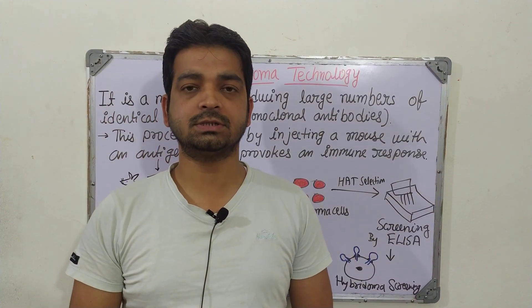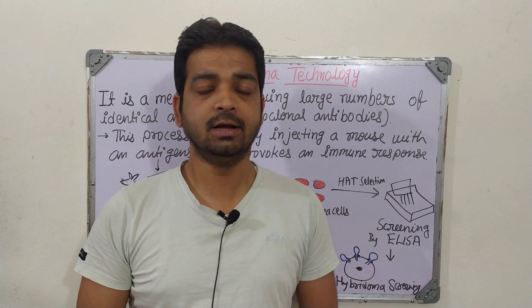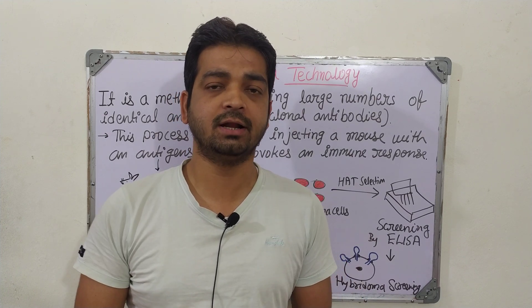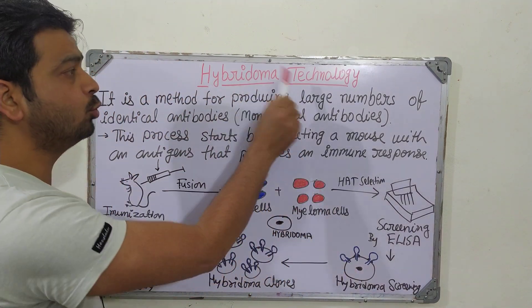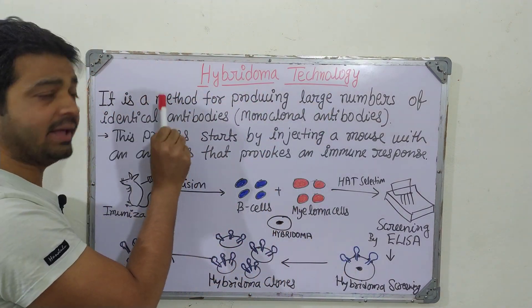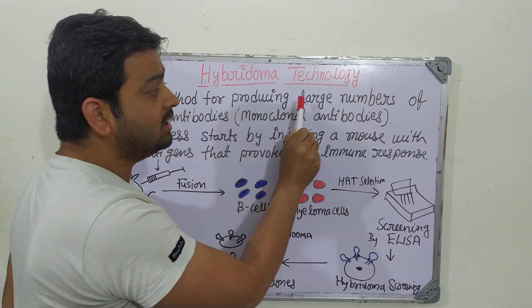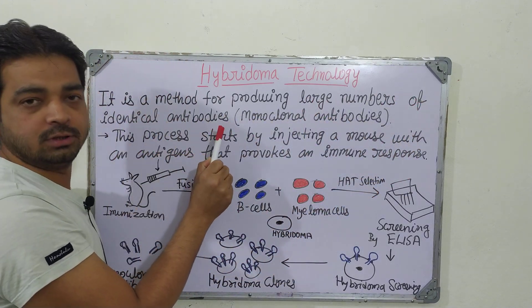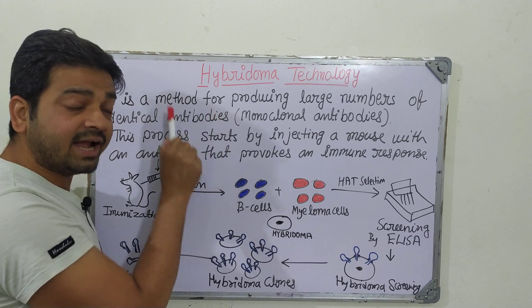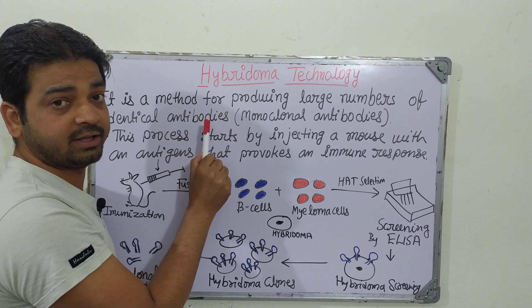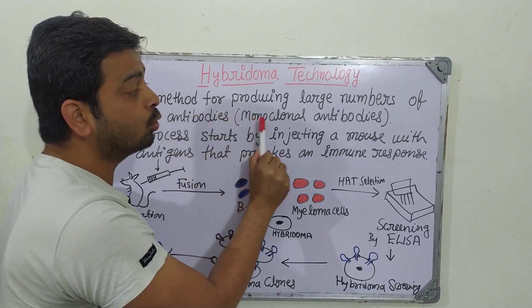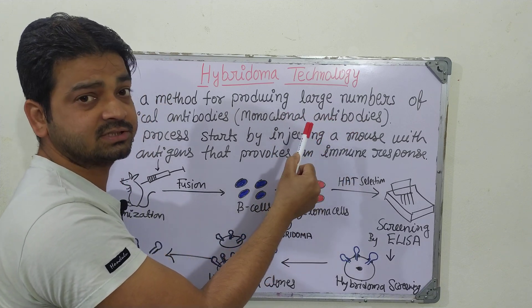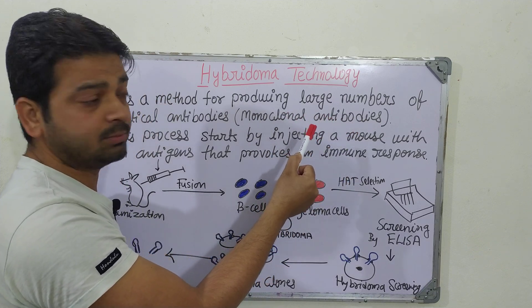We are going to discuss hybridoma technology. This is a method for producing a large number of identical antibodies — the desired antibodies we are expecting. It is also known as monoclonal antibodies. For certain cases, we need to have specific antibodies, and we are producing them by this technology.